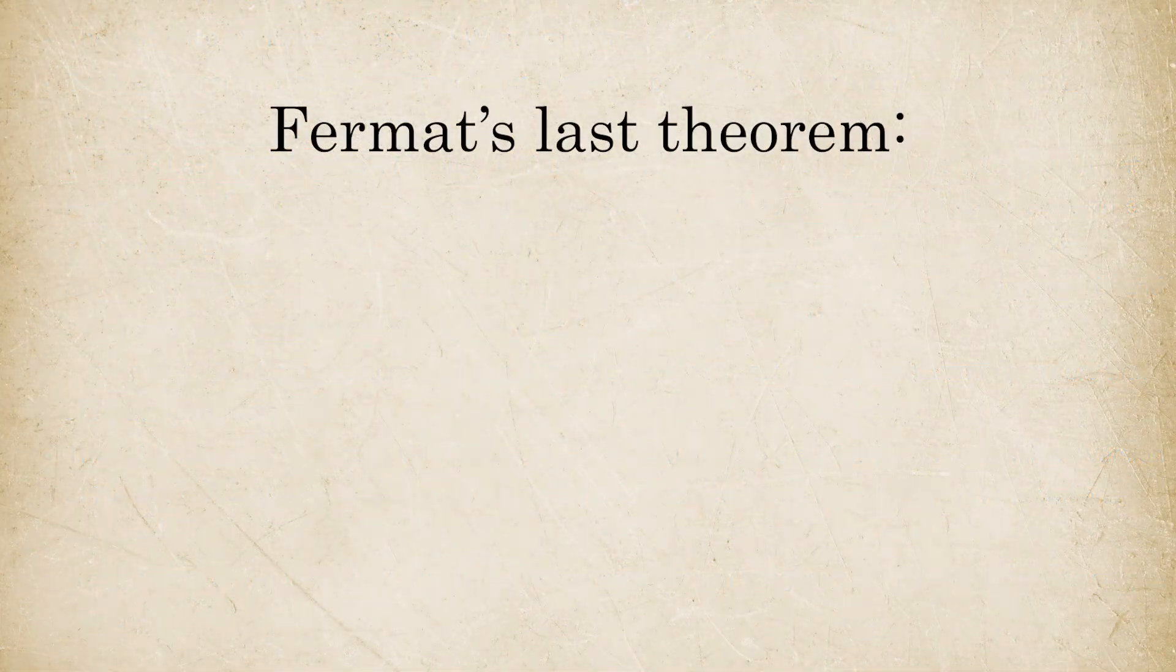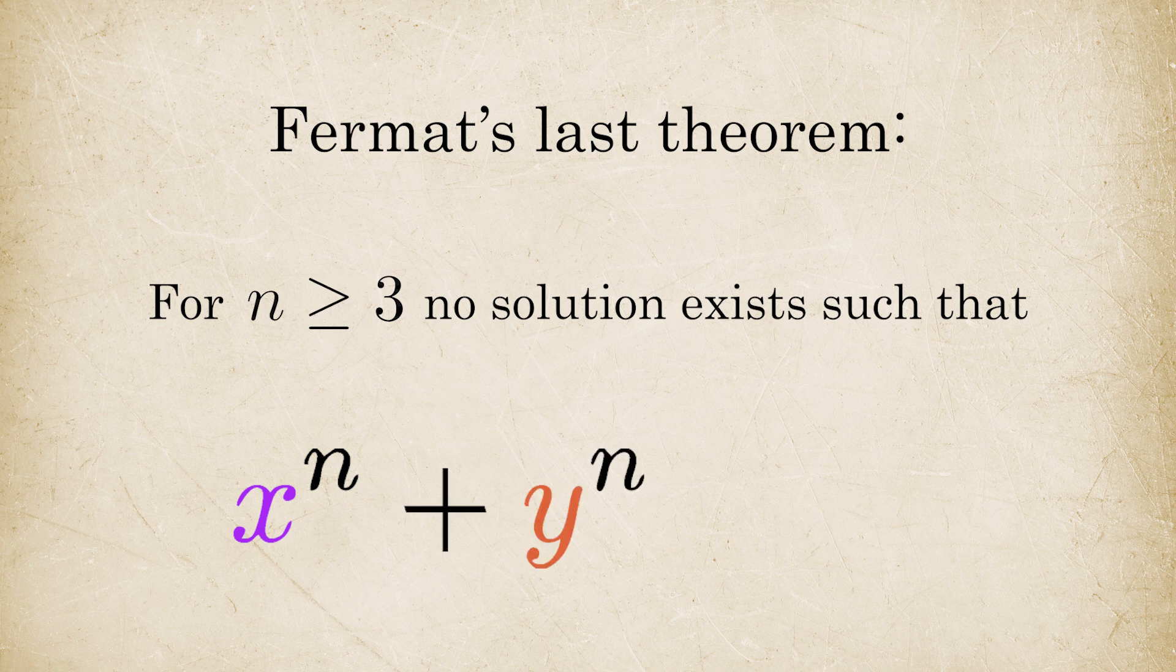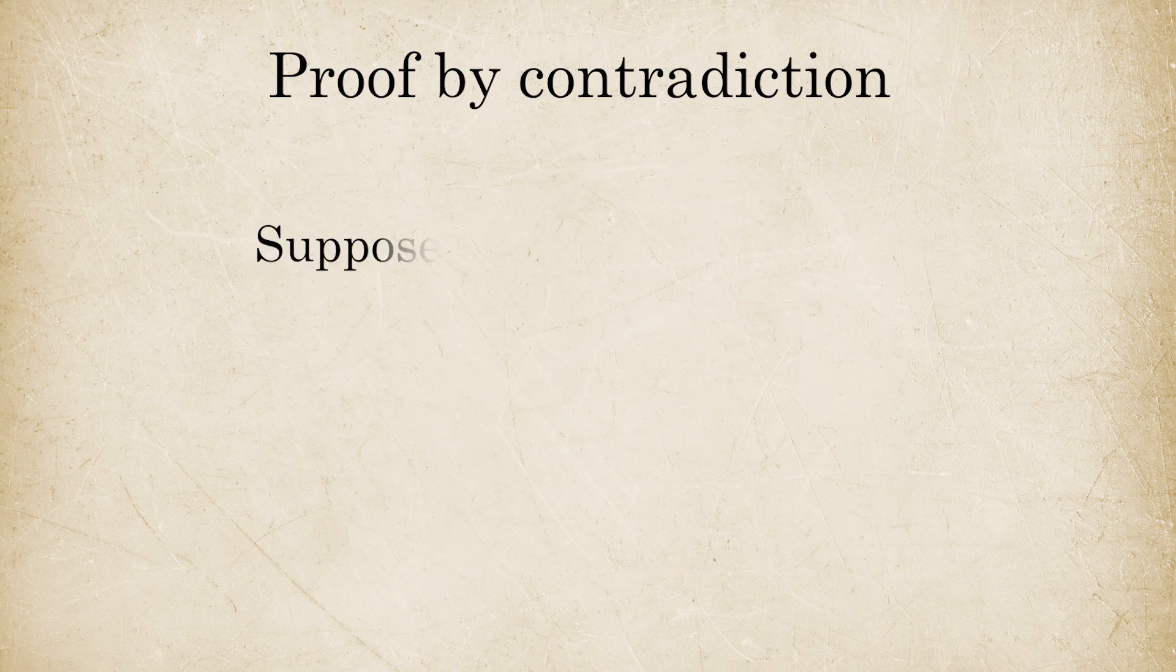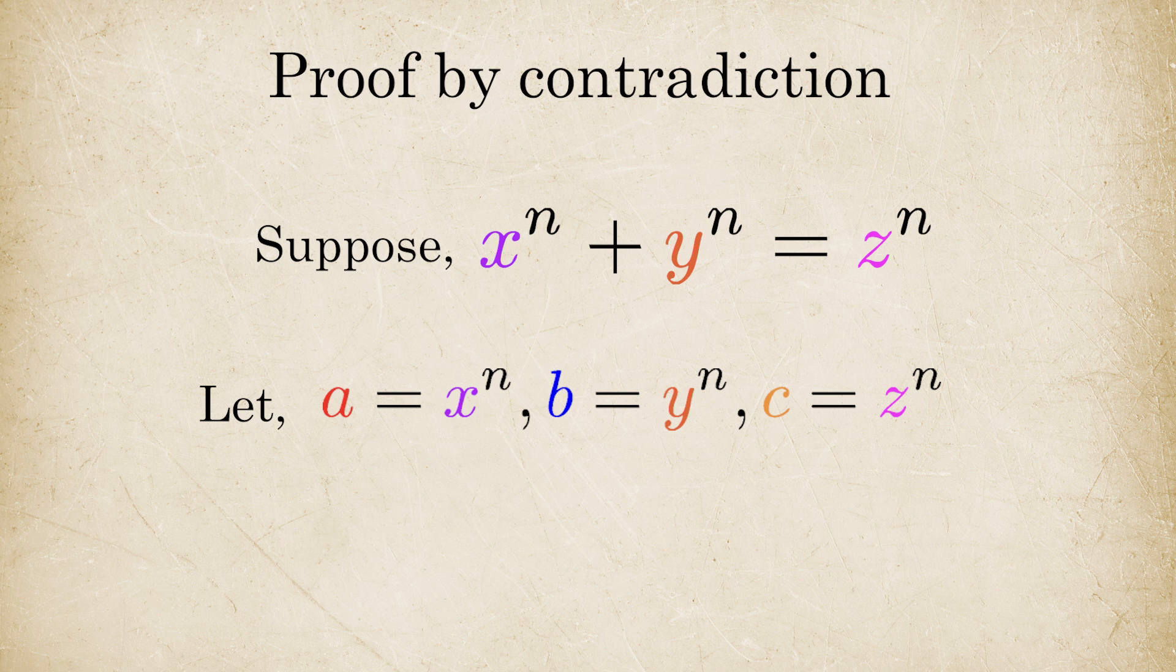Fermat's last theorem says that x^n + y^n = z^n has no solutions in integers for n > 3. Now, for the sake of contradiction, suppose such numbers do exist. We'll let A equals X to the N, B equals Y to the N, and C equals Z to the N. That gives us A plus B equals C, which is exactly the kind of setup the ABC conjecture talks about.